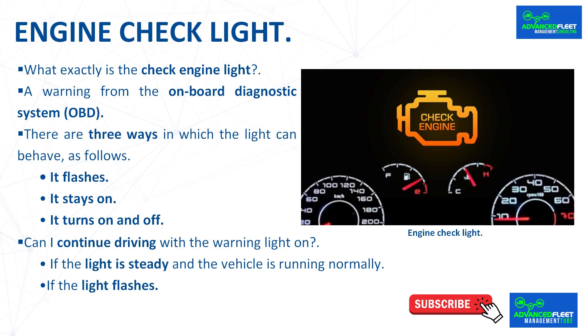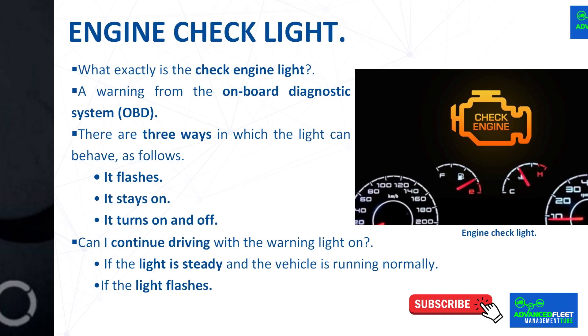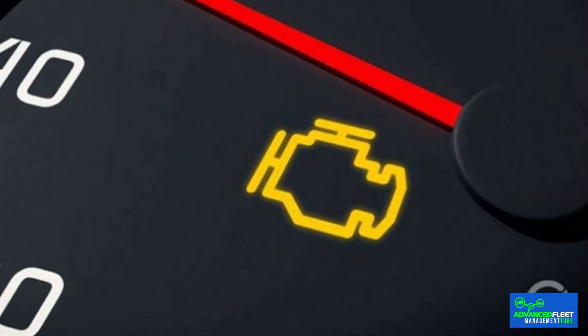The check engine light is a warning from the onboard diagnostic system — a small icon in the shape of an engine that appears on the dashboard. It comes on when the OBD system detects an anomaly. It is normal for it to light up when you start the engine and then go out. However, if it stays on or flashes, it means that something is not working properly, even though the vehicle may continue to run normally.